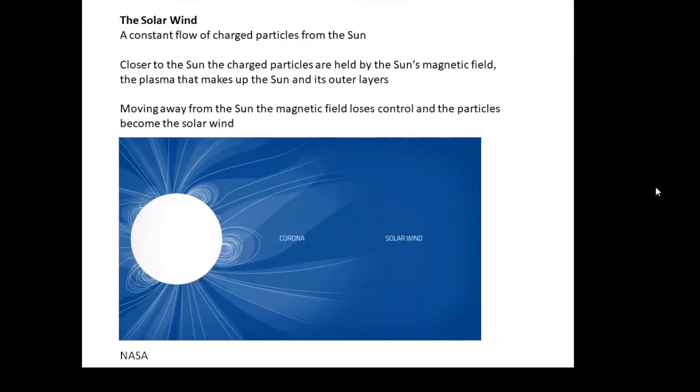Here's a NASA animation of the solar wind. What is the solar wind? It's a constant flow of charged particles from the Sun - positive and negative particles, lots of protons. Closer to the Sun, the charged particles are trapped by the Sun's magnetic field. As you move away from the Sun, the magnetic field gets weaker.